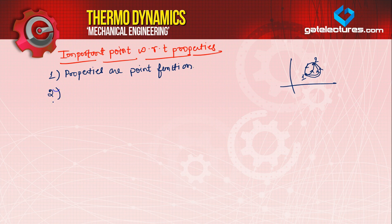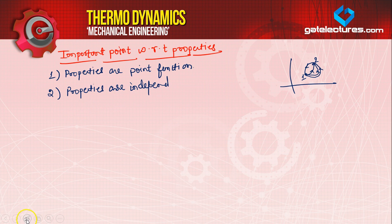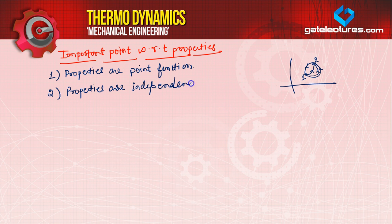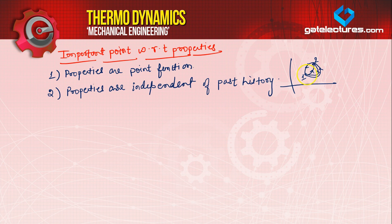Second point: properties are independent of past history. These are not dependent upon the past history — meaning which path was followed or not. Past history for properties — from point 1 to point 2, which path was followed — it doesn't matter. The change in property is evaluated from point to point.